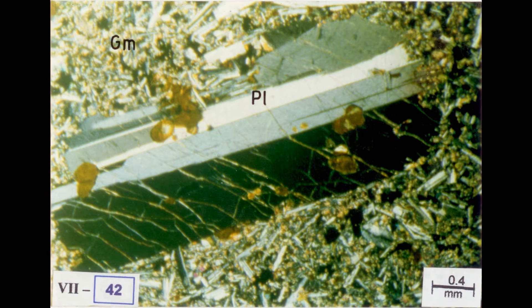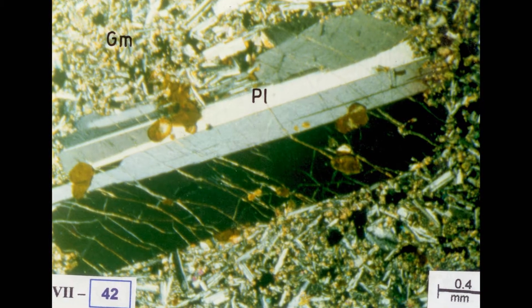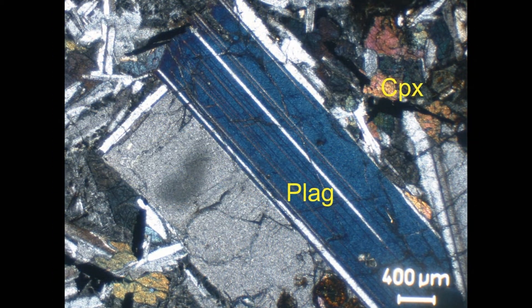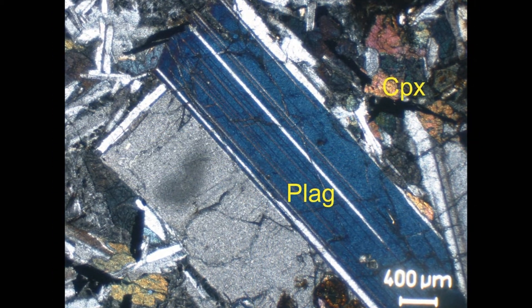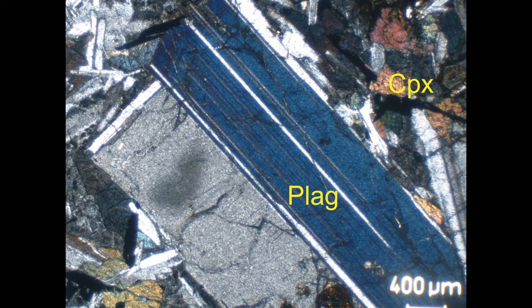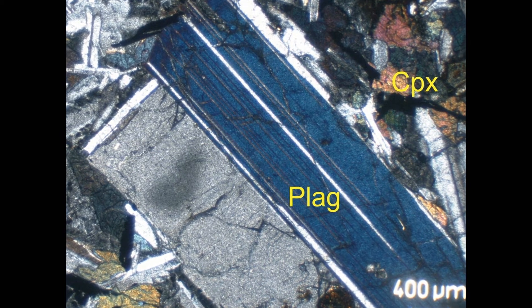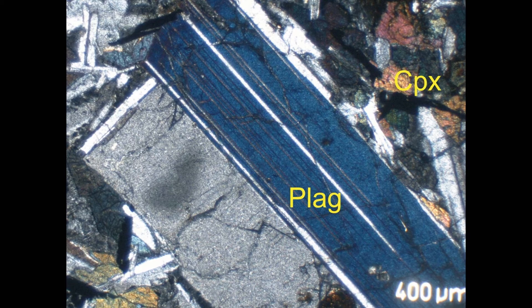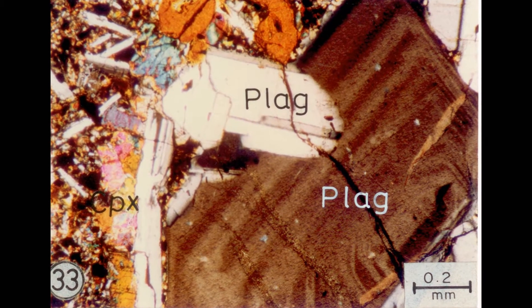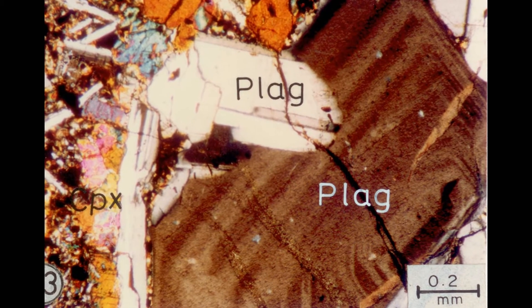Besides this, these rocks display phenomena like twinning. Twin crystals form because of cooling — at the time of cooling, crystal growth was so restricted that twin crystals formed. Rhythmic zoning within crystals is also found, which I will show in subsequent slides.